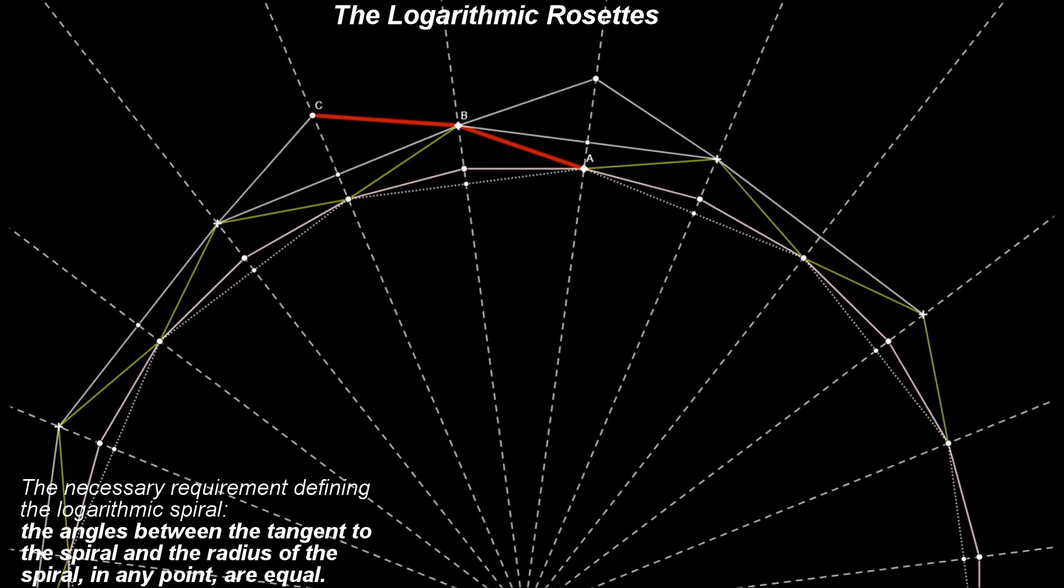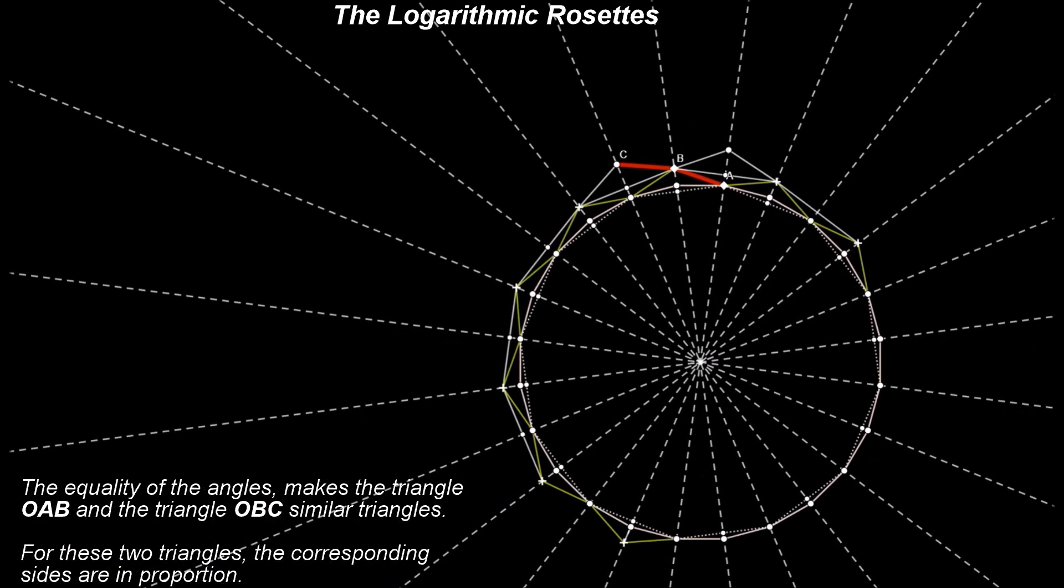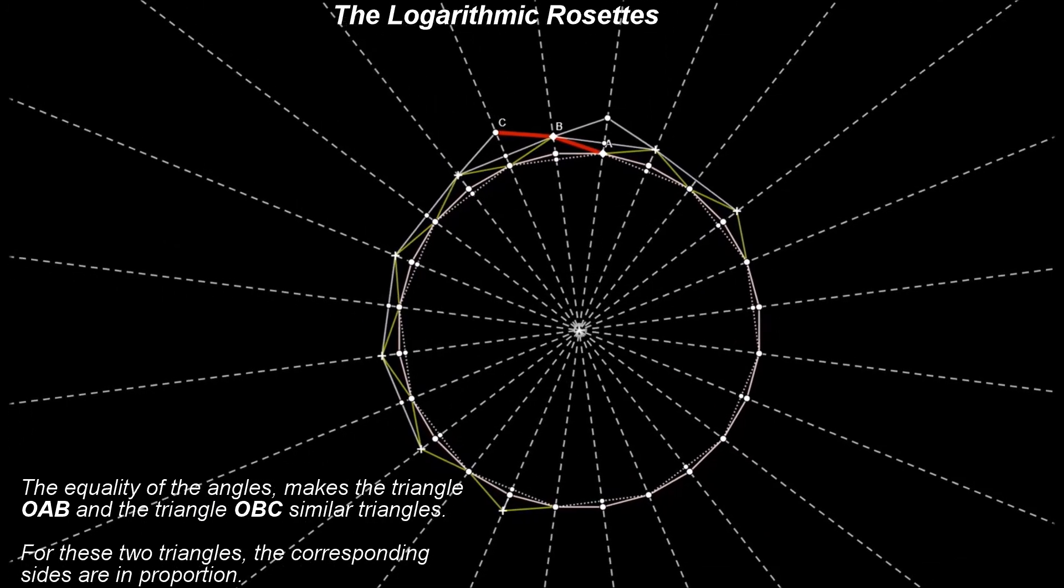The equality of the angles mentioned above makes the triangle OAB and the triangle OBC similar triangles. For these two triangles, the corresponding sides are in proportion. The point O is the center of the circles.